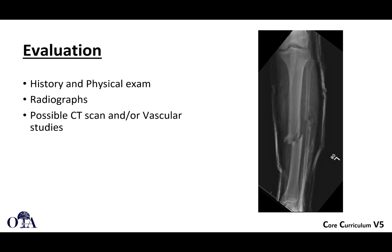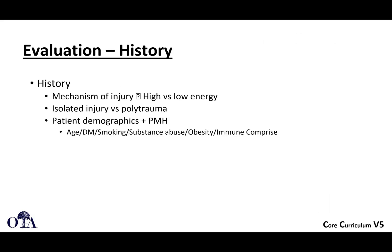Evaluation starts with a history and physical exam. If you have high suspicion for a fracture, you get radiographs — orthogonal views, full-length tibia and fibula, and then the joint above and joint below if you identify a fracture. Sometimes CT scans are needed, especially for distal third fractures, particularly distal third spiral fractures. When indicated, vascular studies may also be needed.